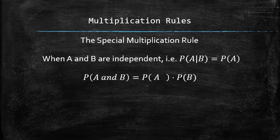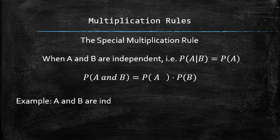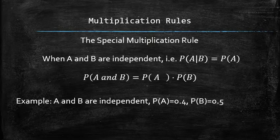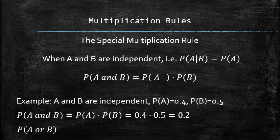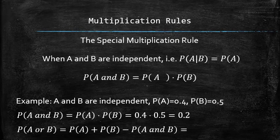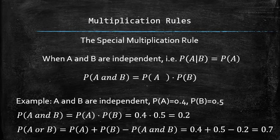For example, if A and B are independent and the probability of A is 0.4 and the probability of B is 0.5, the probability of A and B is the product of the probability of A and the probability of B, equal to 0.2. In this particular example, we can also use the general addition rule and find the probability of the union of two independent events A and B. In this case, it is equal to 0.7.